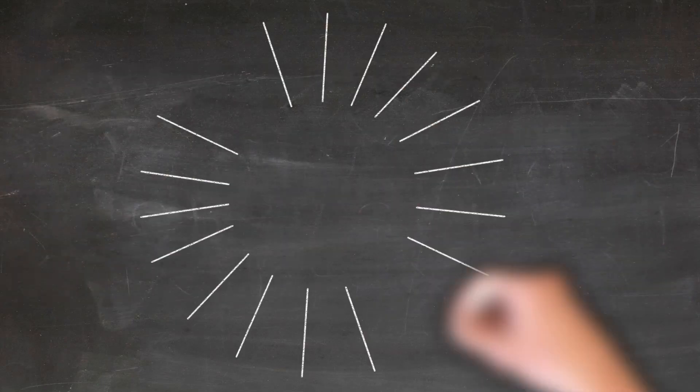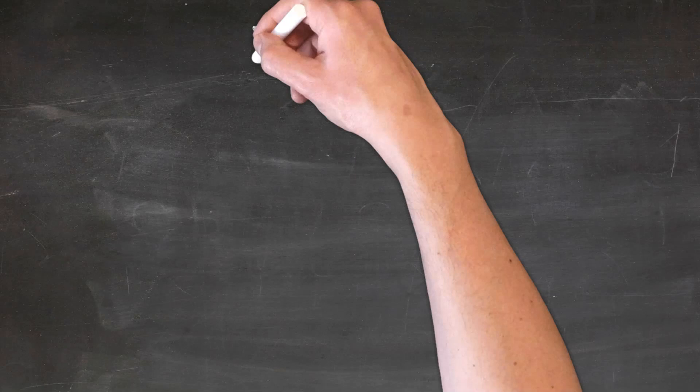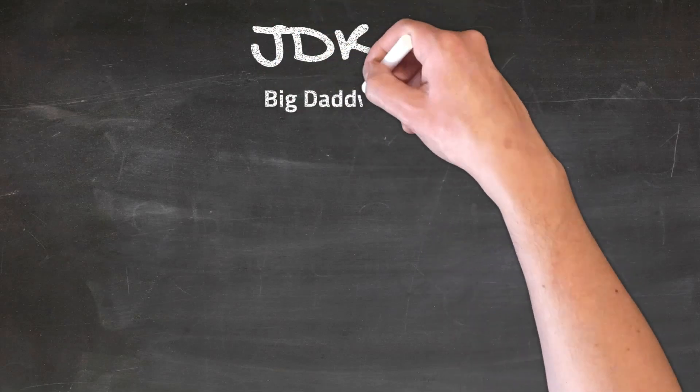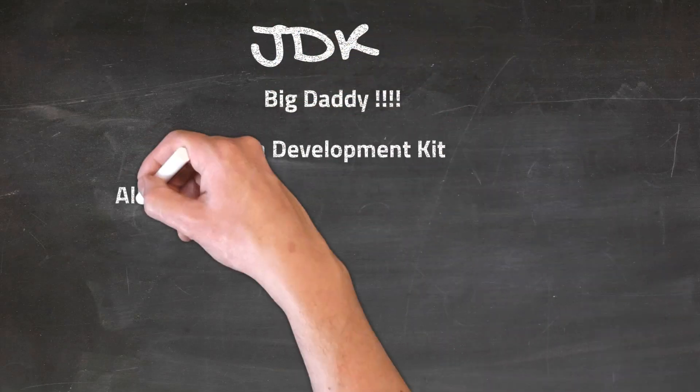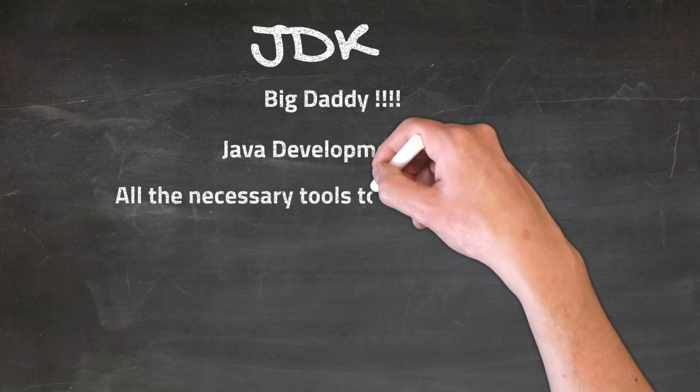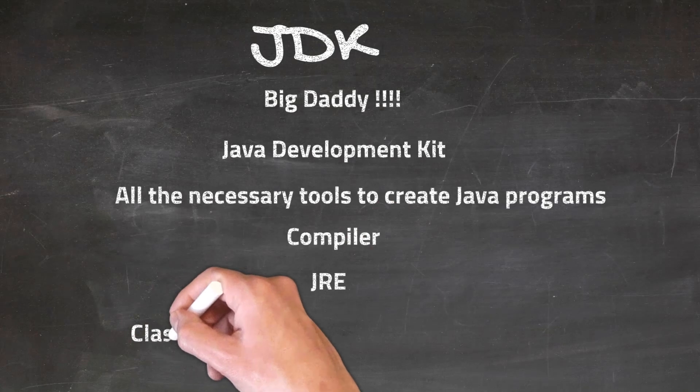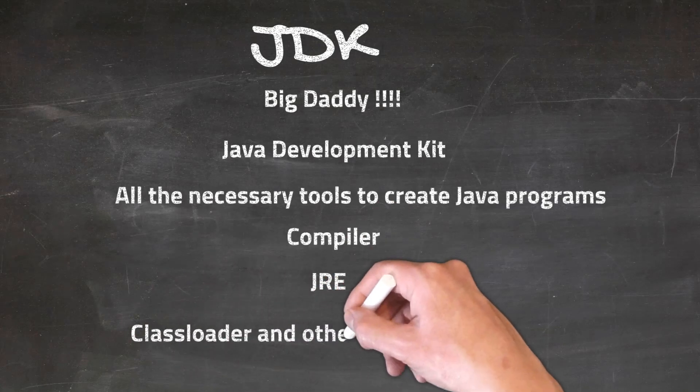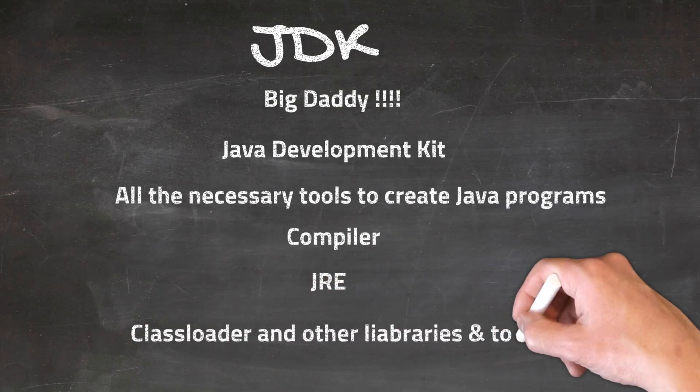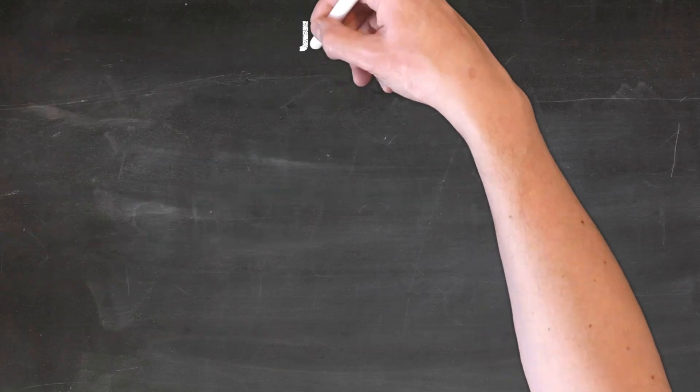The JDK is like the big daddy. It stands for Java Development Kit. It has all the necessary tools to create a Java program, like the compiler, the JRE, and the class loader, which is responsible for loading the classes and other libraries and tools.